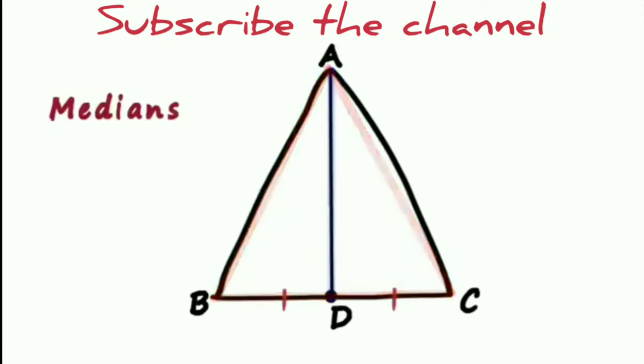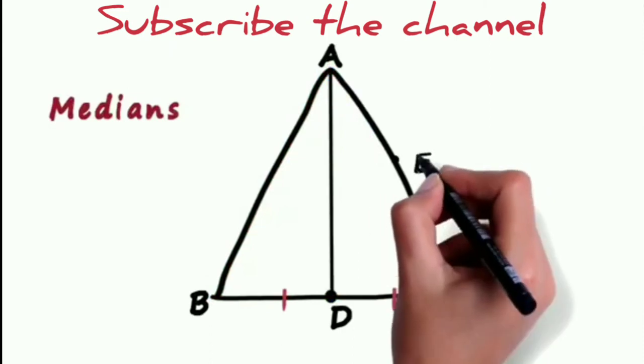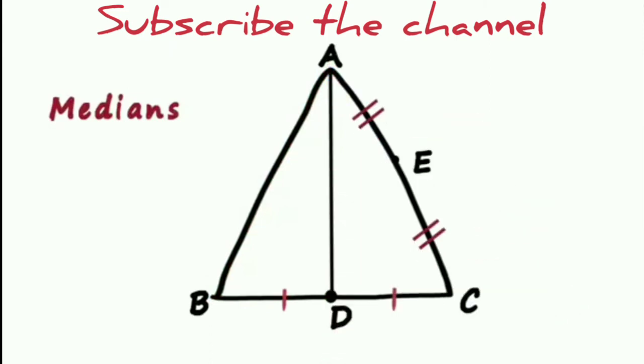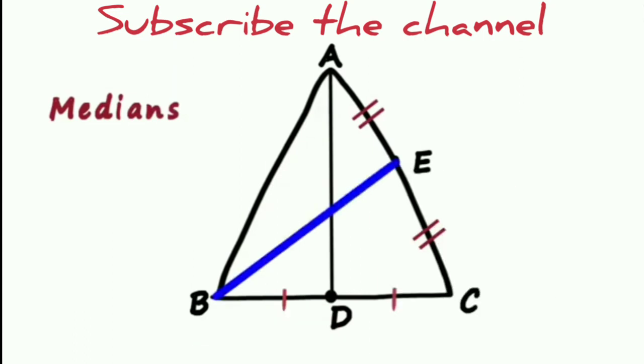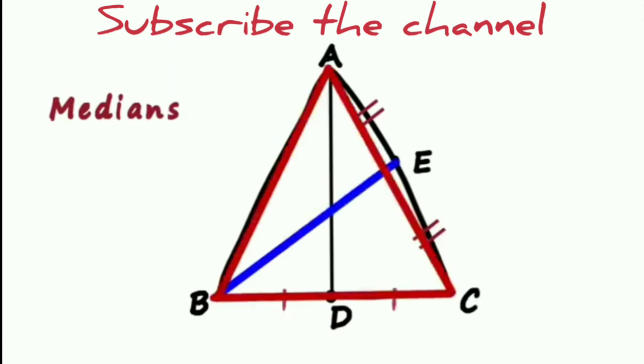Similarly, E is the midpoint of segment AC. Then segment BE is another median of triangle ABC.